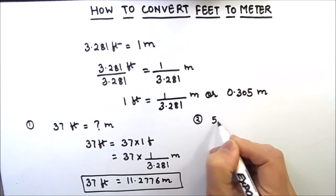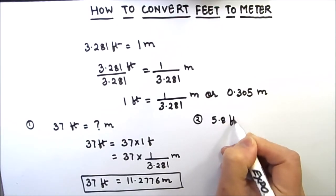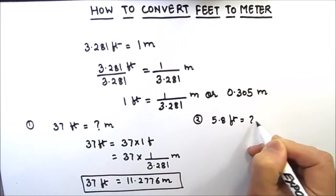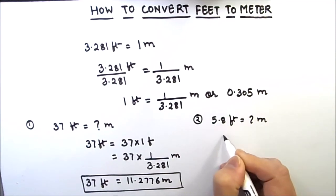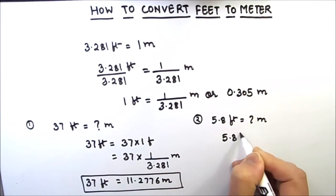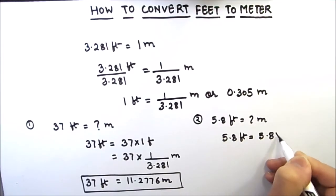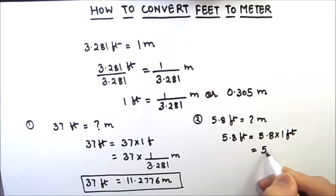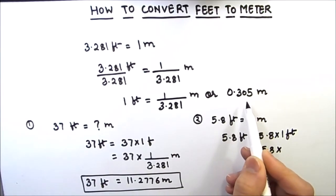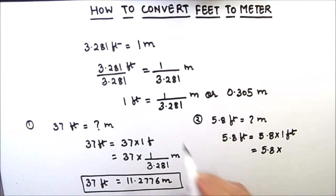5.8 feet we can write as 5.8 times 1 foot, and in place of 1 foot we can write as 0.305 or we can divide by 3.281. So here I am writing as 0.305 meters.